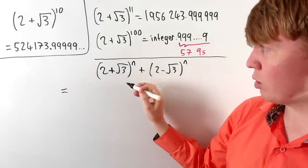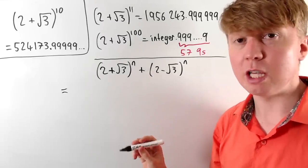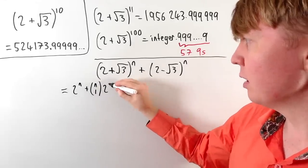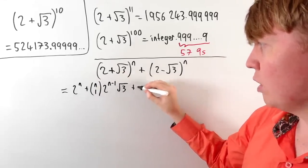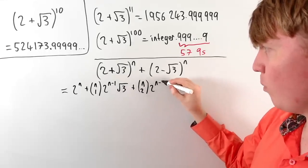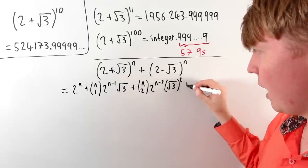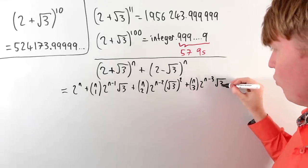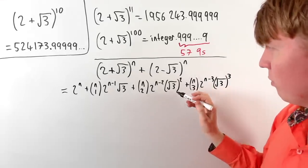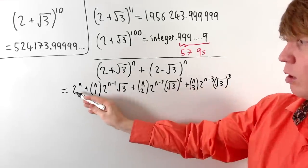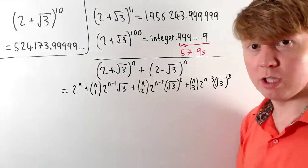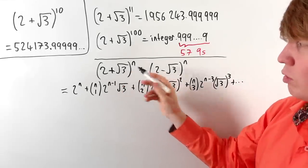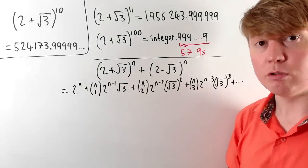We can explain why this sum is an integer by expanding it. Using the binomial expansion of (2 plus root 3) to the power of n, it starts with 2 to the n, then n choose 1 times 2 to the (n minus 1) times root 3, then n choose 2 times 2 to the (n minus 2) times root 3 squared, then n choose 3 times 2 to the (n minus 3) times root 3 cubed, and so on until the final term, root 3 to the n. Some of these terms are integers — for example the first term, and any term where root 3 appears to an even power.